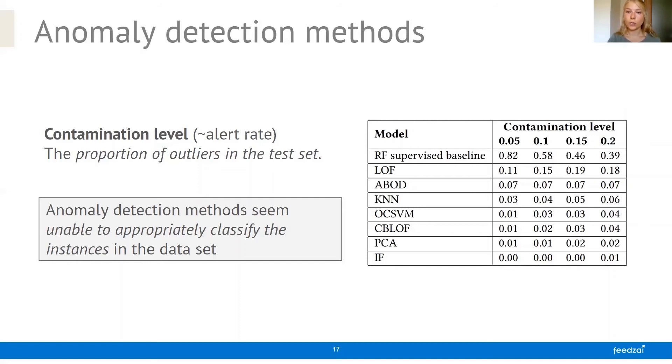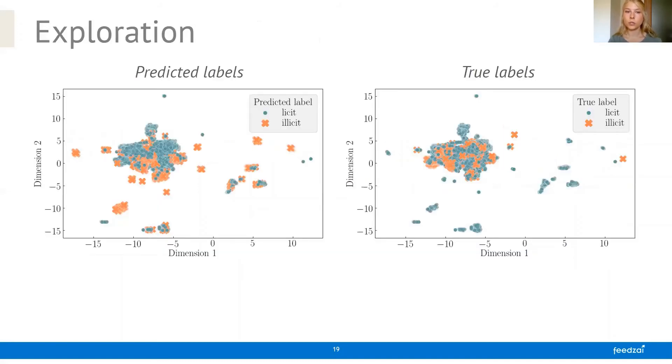So in order to find out why this was the case, we did a visual exploration of our data. And we did this by transforming our data using UMAP, which is a dimensionality reduction technique. And here we are showing our test set in two dimensions and we are coloring it on the left by the predicted label from our worst performing anomaly detection method, the isolation forest. And on the right we're coloring it by the true label. And what we can see here is that the isolation forest seems to be catching the outliers as it should and labeling them as illicit.